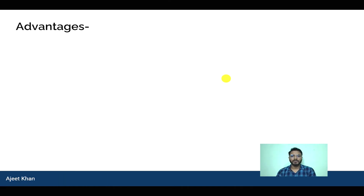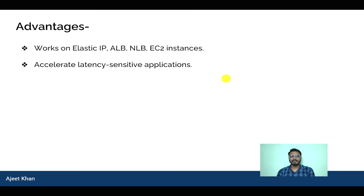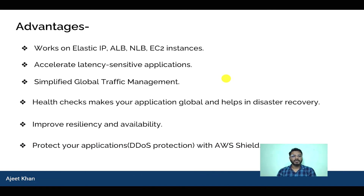Let us see the advantages of Global Accelerator. It works with Elastic IP, ALB, NLB, and EC2 instances — you can forward requests to any of these endpoints. It helps accelerate latency-sensitive applications and simplifies global traffic management. It also helps in disaster recovery thanks to health checks, which regularly check your endpoint and direct traffic to a healthy one if it becomes unhealthy. It improves resiliency and availability, and it protects your application from DDoS attacks by integrating with AWS Shield.